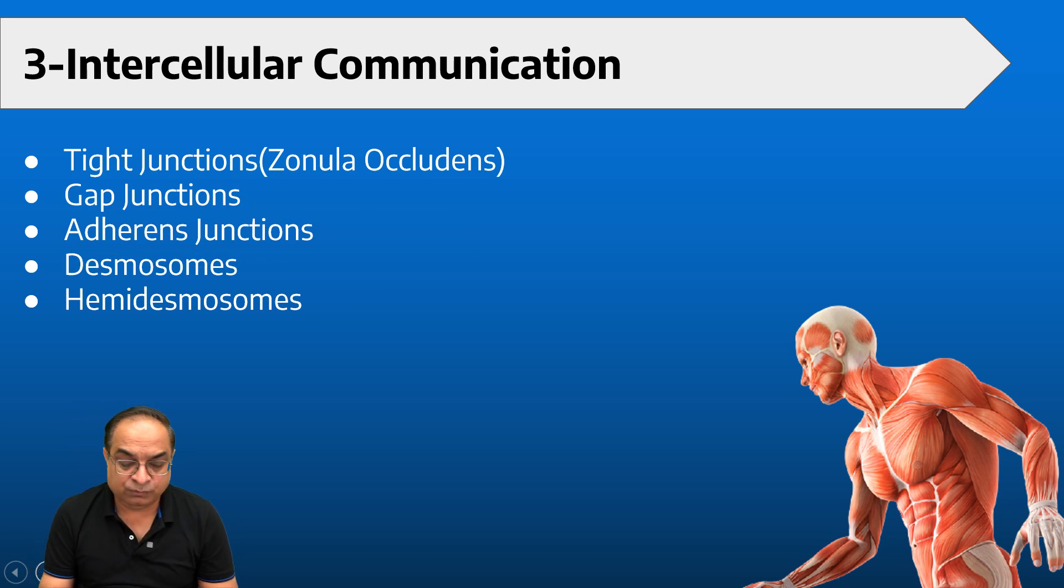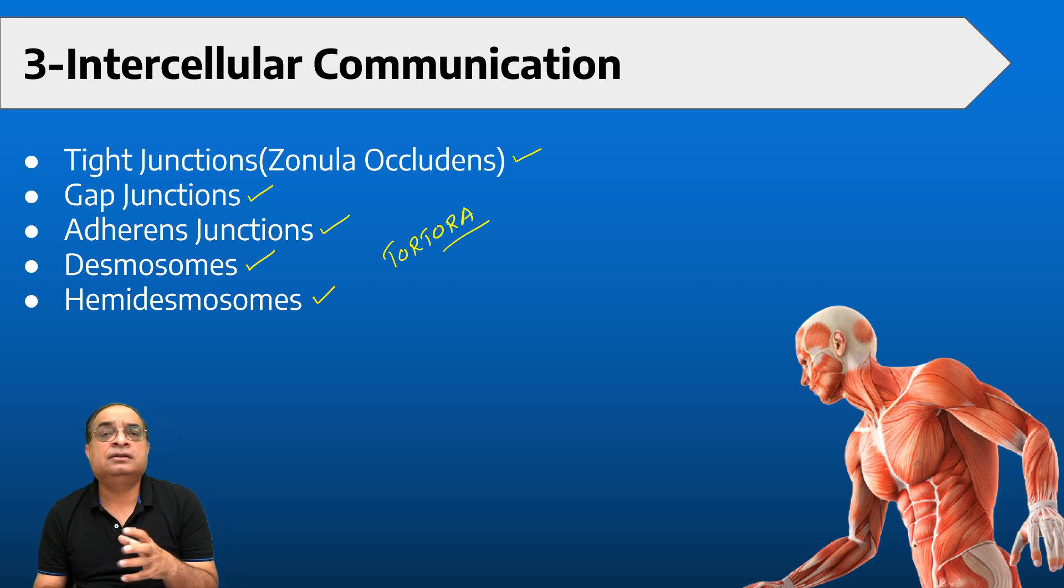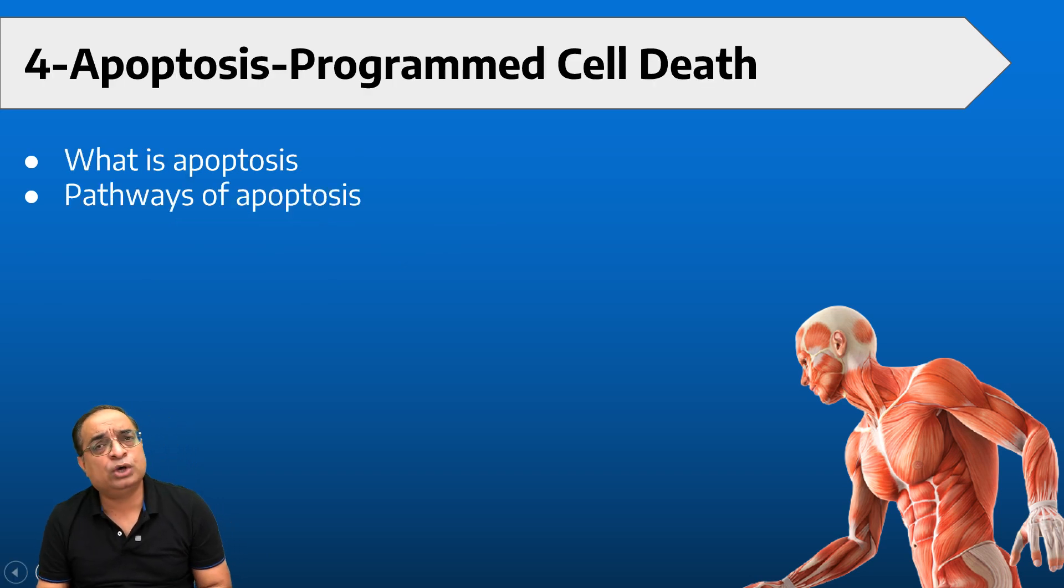When it comes to intercellular communication, we need to discuss about zonula occludens, that is tight junctions, gap junctions, adherens junctions, desmosomes, hemidesmosomes. These topics are very beautifully explained in the book Tortora with the diagrams. See, I told you to follow Guyton and Hall South Asian edition for physiology as a basic book. It explains everything very nicely, but certain diagrams are not very good, I'm sorry to say that. So in that case, we need to follow certain other books for flowcharts and diagrams. So for this particular topic, I am telling you to follow Tortora.